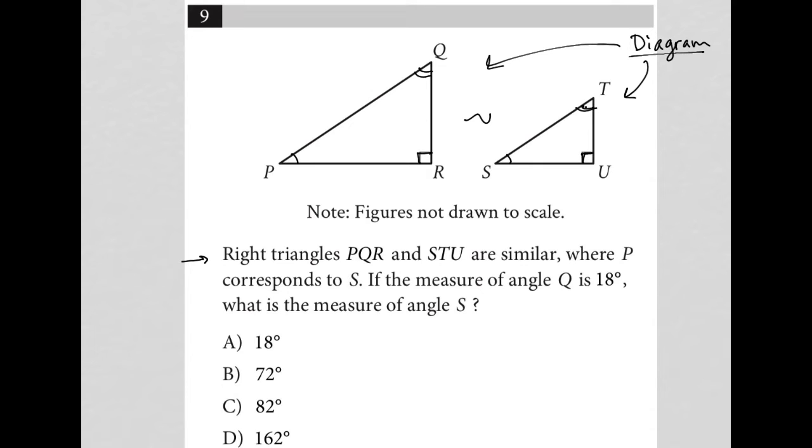And we should also know that the side lengths - so PQ is not equal to ST, but it's proportional to ST. So I'll just put those symbols there for now. They're not representing equal in this case. They're just representing that they're proportional to each other.